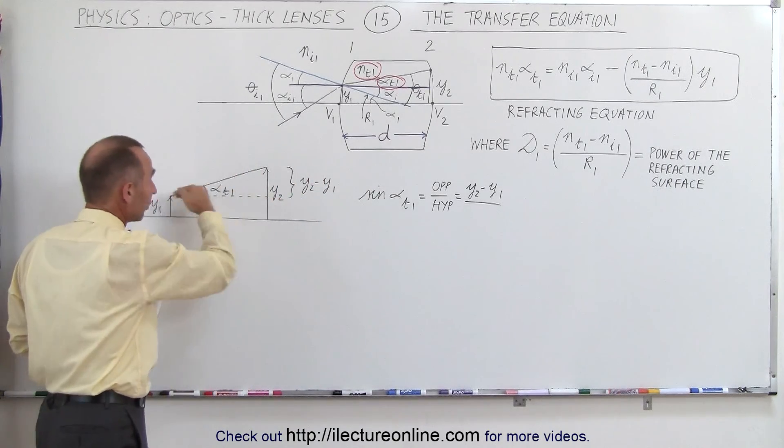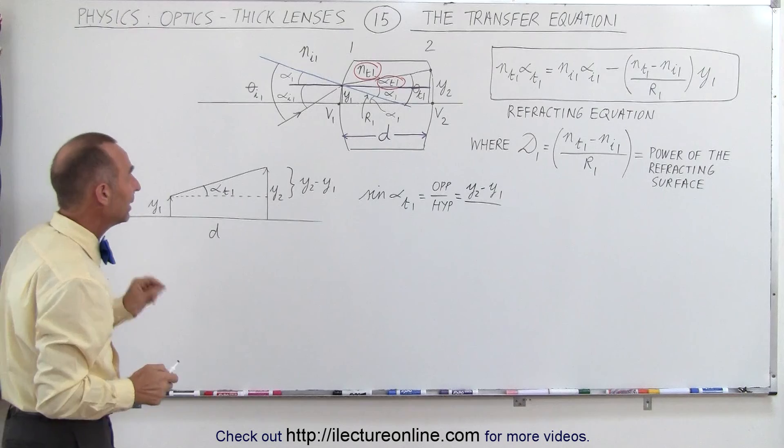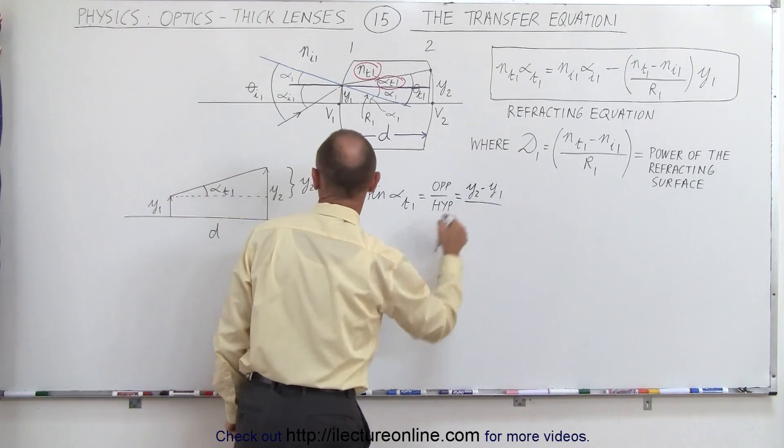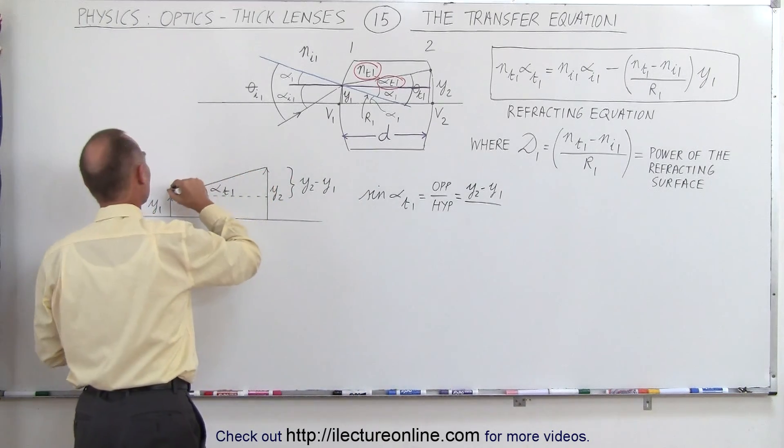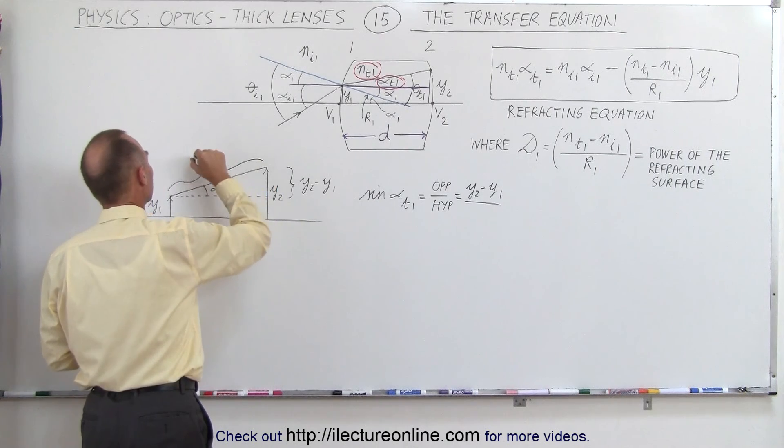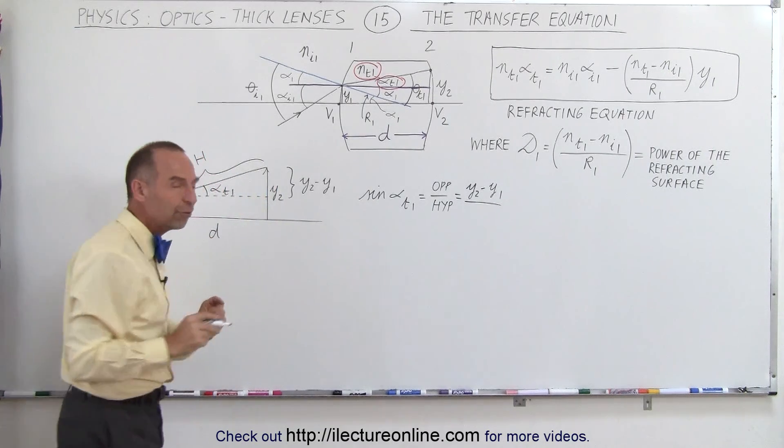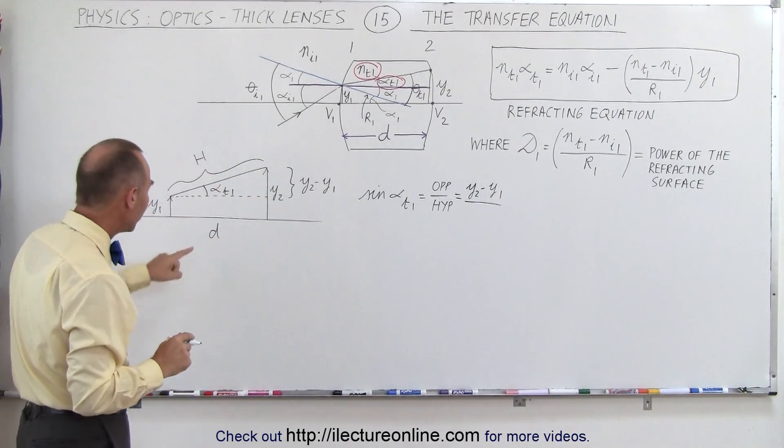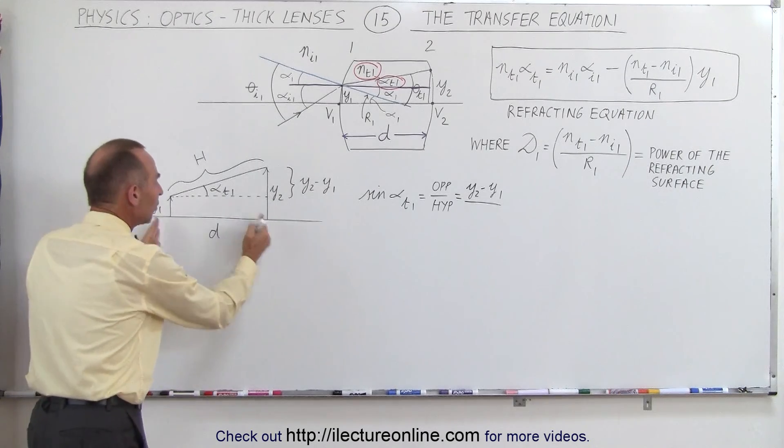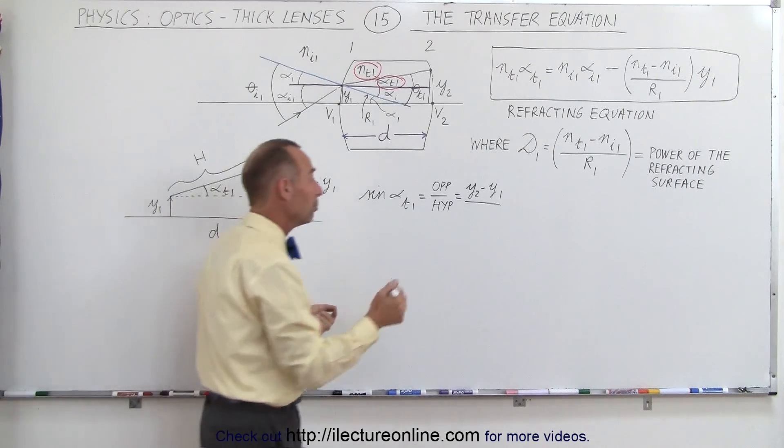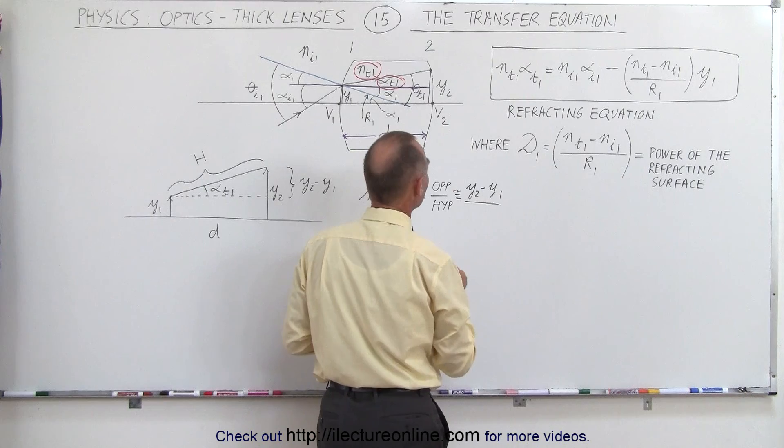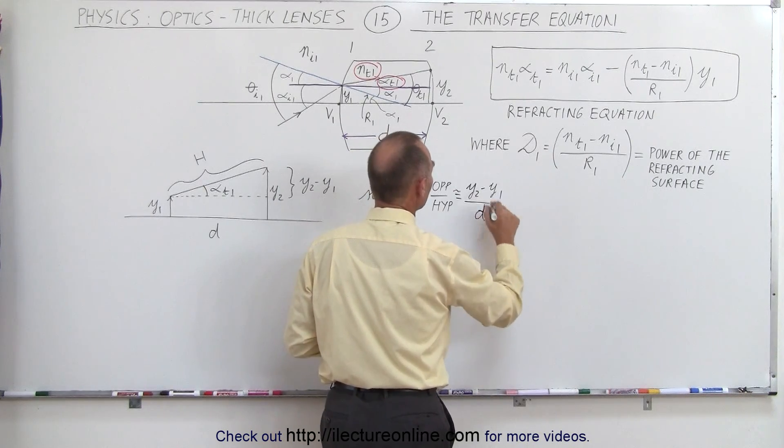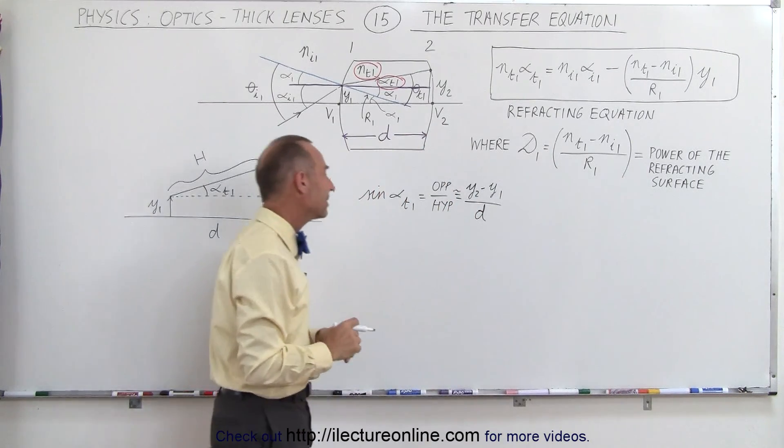It could actually be lower than the first point, it doesn't matter. And then we divide that by the hypotenuse. Now the hypotenuse is this distance right here. But for very small angles, that is approximately equal to the distance between the two points. So because we're dealing with small angles, we can say that's approximately equal to the difference in height divided by d.